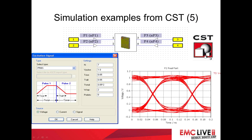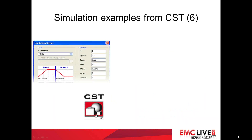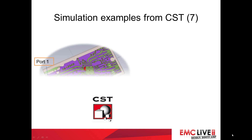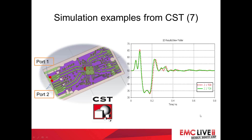Here's another simulation of a pulse propagating through something and producing an eye diagram. Here we can see the input signal and the signal at the other end — looks like we're getting some inter-symbol interference creeping in there. And this is another example from CST — looks like some kind of microwave circuit, simulating the waveform at 200 picoseconds per division.